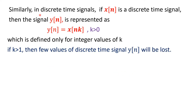Similarly, in discrete time signals, if x(n) is a discrete time signal, then y(n) = x(k·n) for k greater than 0. So here y(n) is defined only for integer values of k. If k value is greater than 1, then few values of discrete time signal y(n) will be lost.